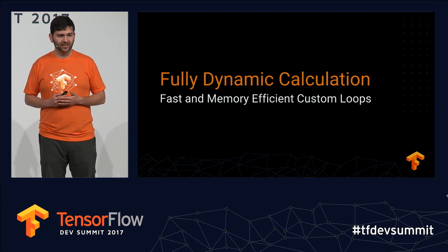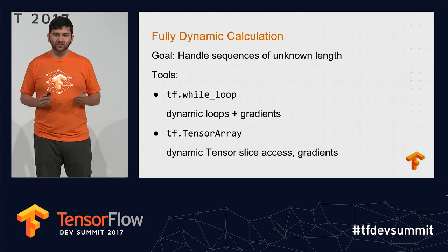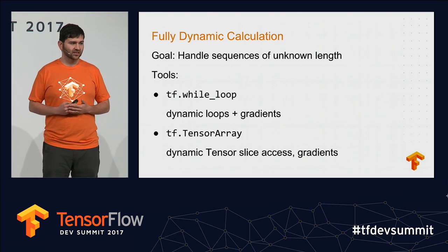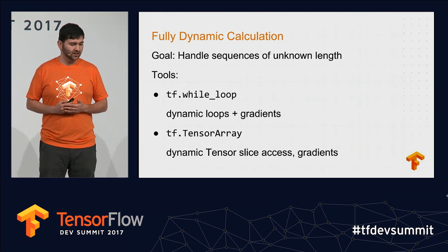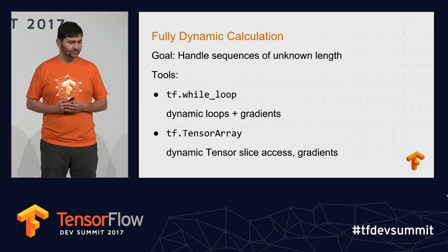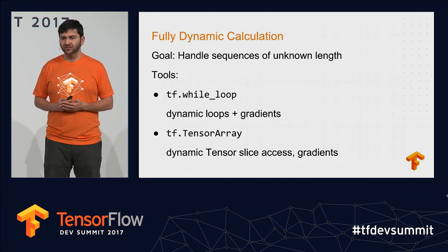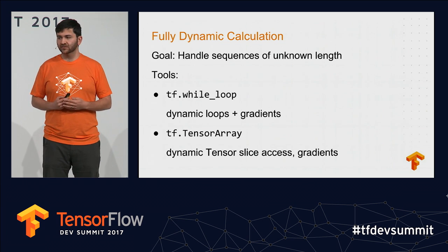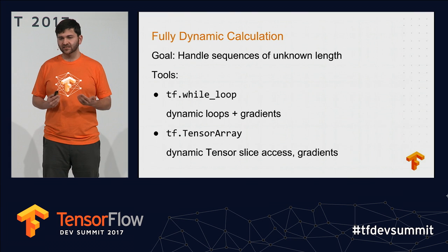Let's talk about how to perform dynamic calculation in TensorFlow. There are two main primitives: the tf.while_loop, which allows you to build dynamic loops and supports backprop; and TensorArray, which allows you to efficiently read and write slices of tensors and also supports backprop.